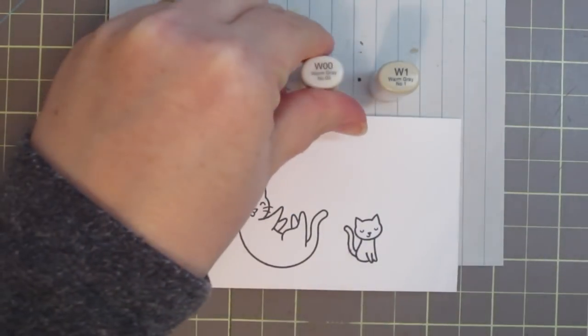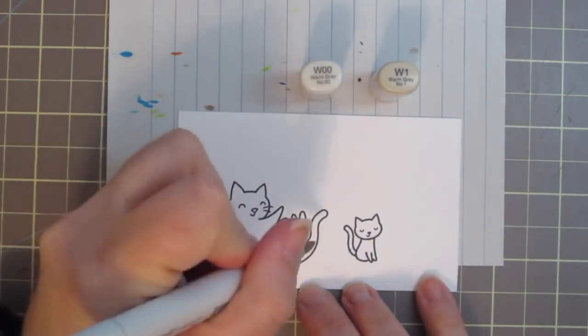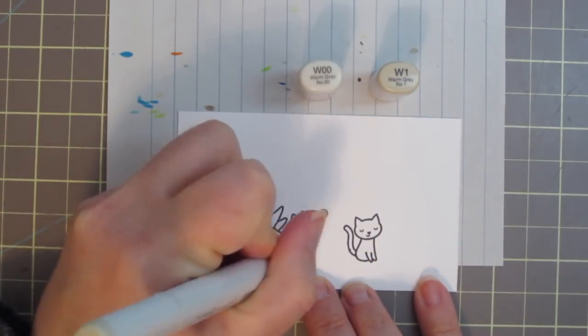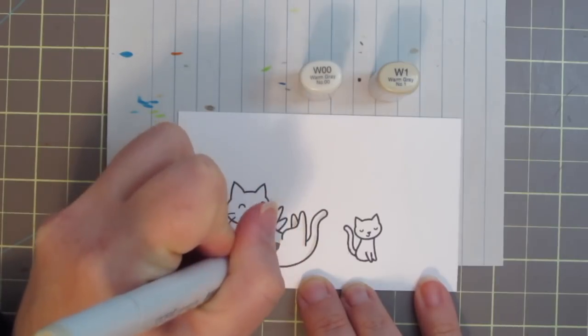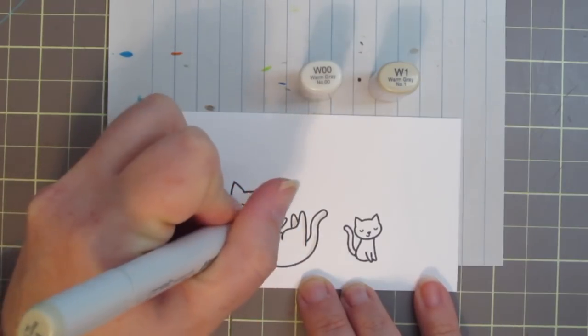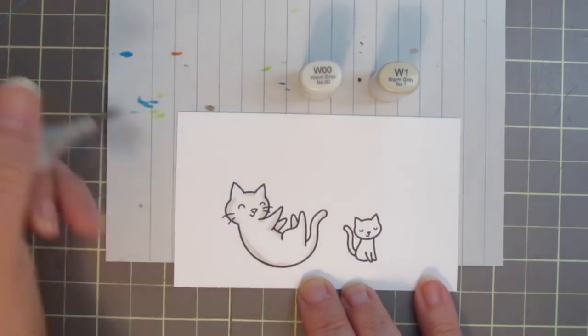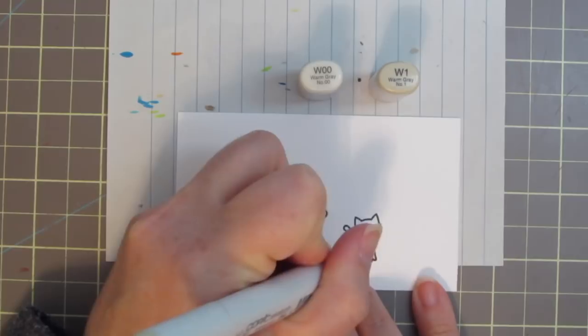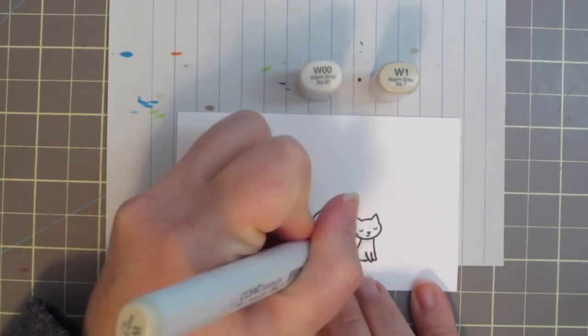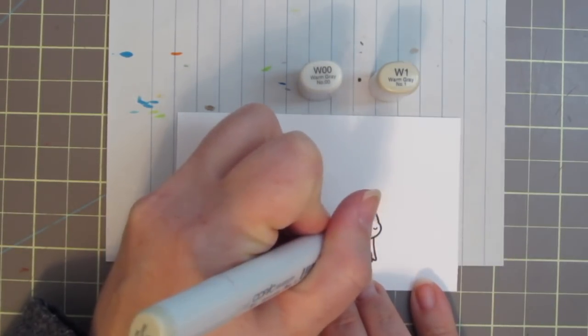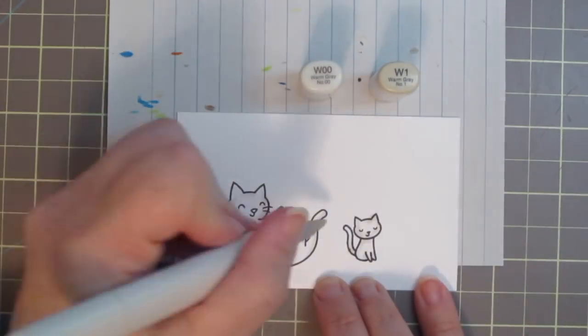So I've stamped out my images on some Spectrum Noir Ultra Smooth white cardstock with my Tuxedo Black Memento ink, and I'm going to begin with my Copic coloring today. I'm using some warm grays to give my cat and my kitten some shadows because they're going to be partially white, and I just find it easier to do the white shadows all over first.